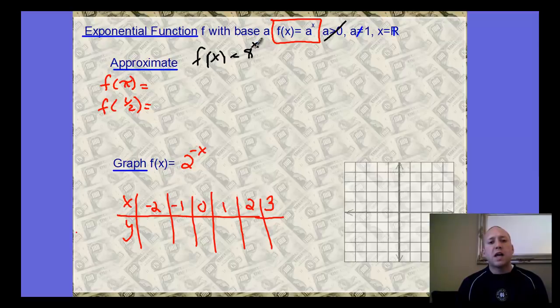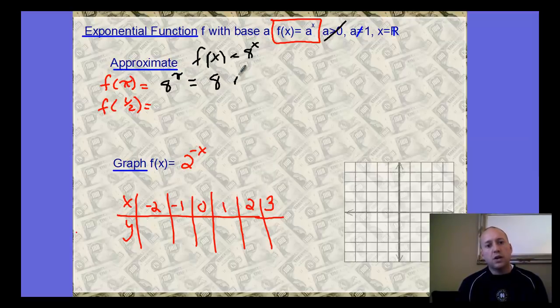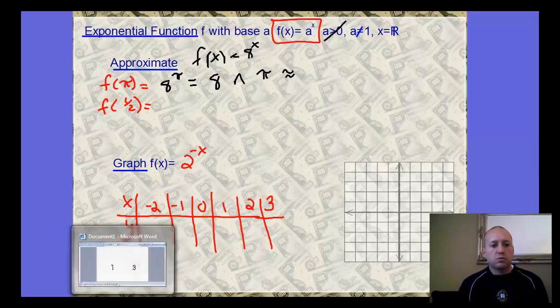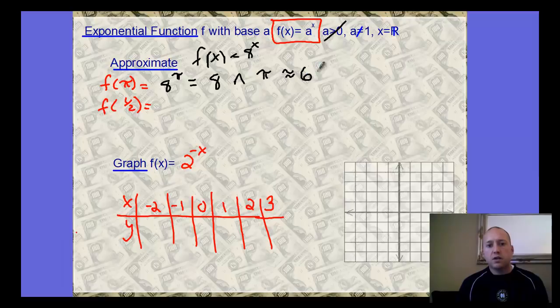For example, if I have f(x) equals 8 to the x, for f of pi, you can write that as 8 to the pi power. I just want to talk about how to punch this in the calculator. The 8 on the calculator, the caret key, then you hit the pi key, and then you hit equal to approximate that value. I can give you that value, so it's 687.29.